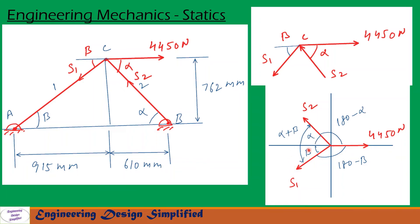Since this is alpha and this is beta, so total angle between S2 and S1 is alpha plus beta. Since this is alpha plus beta, then this side will be this is alpha and from here to here 180 degrees. So angle between S2 and this force is 180 minus alpha. Similarly this side, angle between S1 and this force is 180 minus beta.